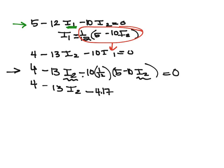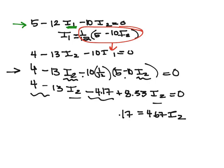And then I have two negatives. So I have plus 10 times 10 divided by 12, which is 8.33 I2 equals 0. Now I collect my like terms. And I get 0.17 equals 4.67 I2. I divide both sides.